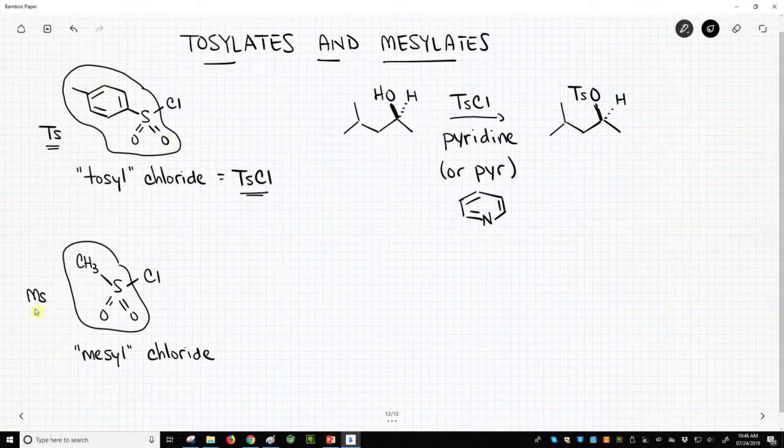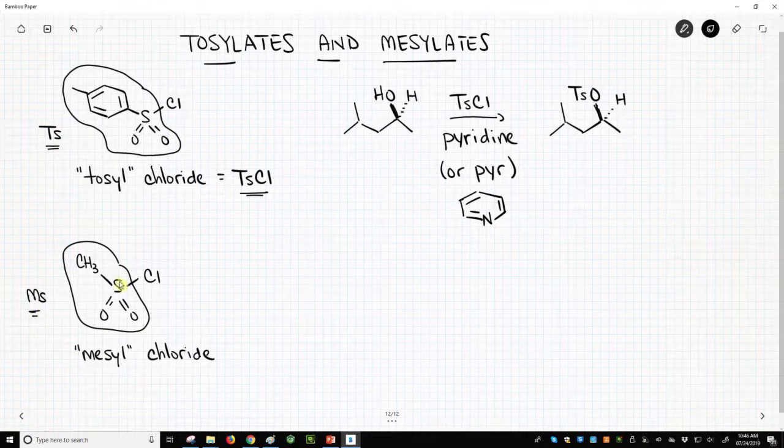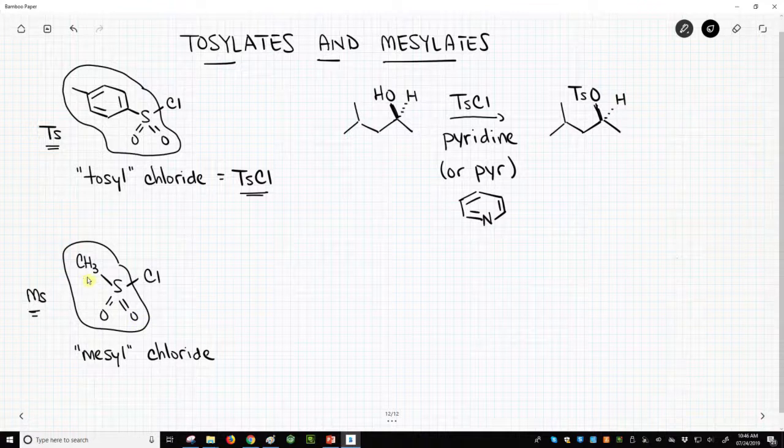Mesylate is very closely related. It's a little bit smaller, but it also has a sulfur with two double bonds to oxygens and another R group, except it's a methyl group instead of this big benzene ring thing.